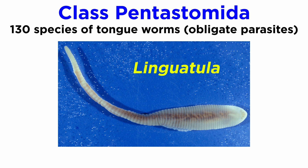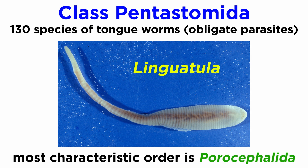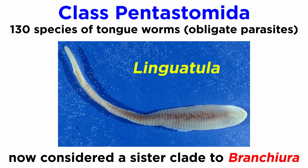Members of class Pentastomida are commonly called tongue worms, because members of the genus Linguatula somewhat resemble vertebrate tongues. All 130 or so described species are obligate parasites with highly degenerate anatomy, all of which parasitize the respiratory systems of vertebrates, including humans on rare occasions. There are four extant orders of tongue worms recognized, of which Porocephalida is the most characteristic. They were once placed within their own phylum but have recently been classified as a sister clade to the parasitic fish lice, though this is still contested by some.